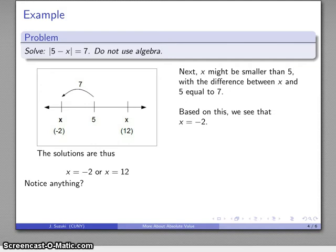And it's worth asking the question. Notice anything interesting here. Remember, this solution is exactly the same as our solution to absolute value of X minus 5 equals 7. There is no fundamental difference between the two equations. They look different, but they are essentially the same equation, solved exactly the same way.